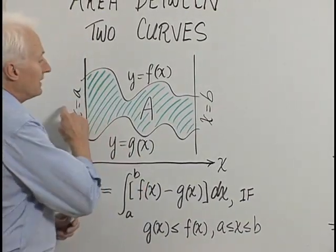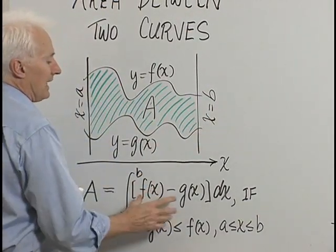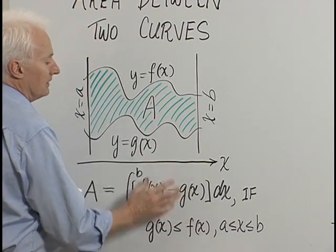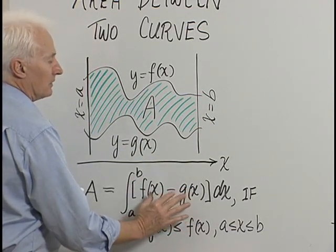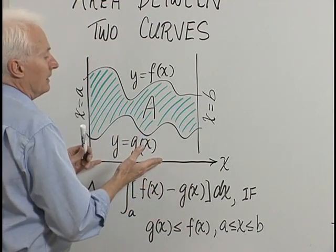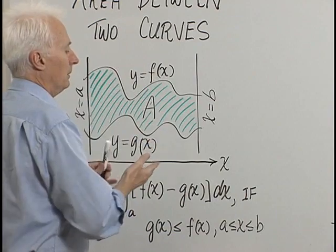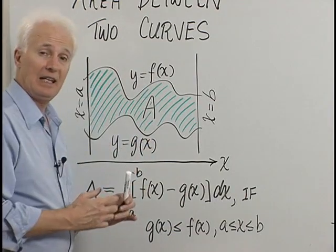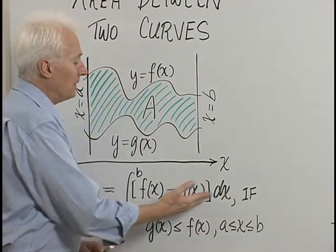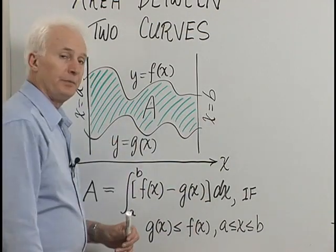If the x-axis were to go through anywhere else, I could add a constant to both f and g — the same constant. The difference would cancel that constant out, but in terms of the graph, adding a big positive constant would shift both graphs up above the x-axis without changing the area. So this formula has to be true no matter where the x-axis goes.